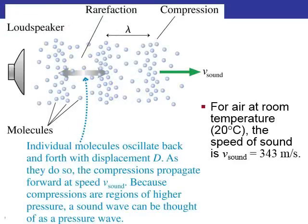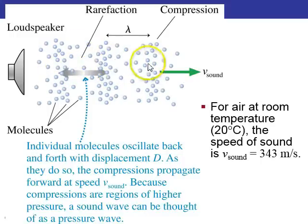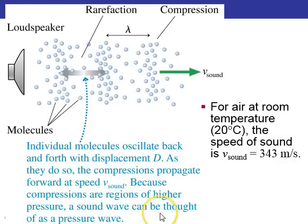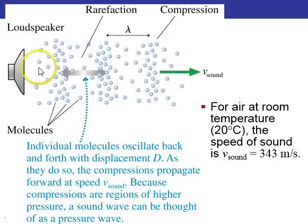A sound wave from a loudspeaker oscillating left and right causes the molecules of air to oscillate left to right, creating a longitudinal wave. You'll see regions of compression where the density is higher, and rarefaction where the density is lower. These travel along at the speed of sound, which is 343 meters per second in a typical room with air at room temperature. As density of air increases, so does the pressure, so these regions of higher density are also regions of higher pressure. If you plot pressure versus distance, you see a sine wave — sound can be thought of as a pressure wave.